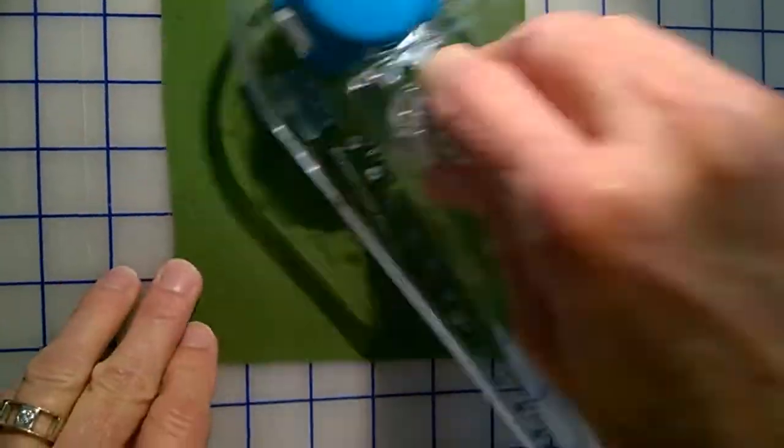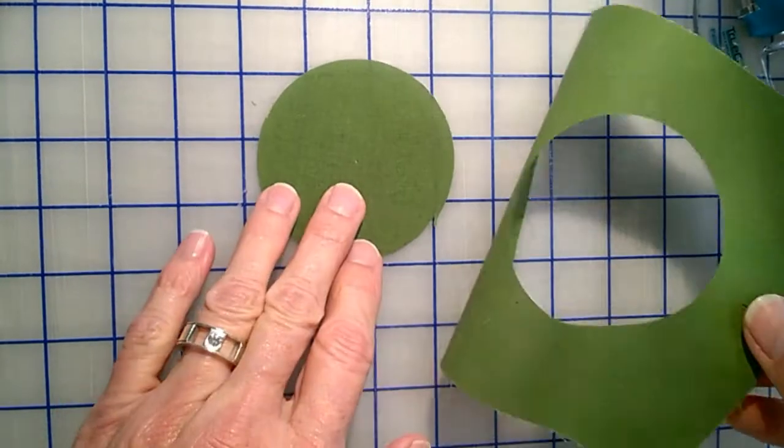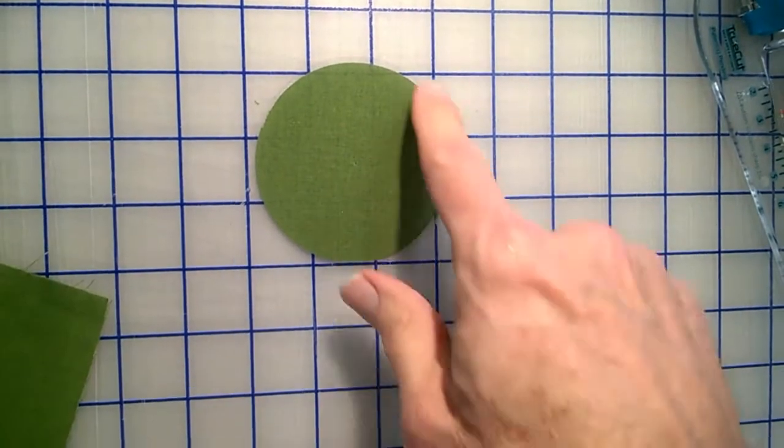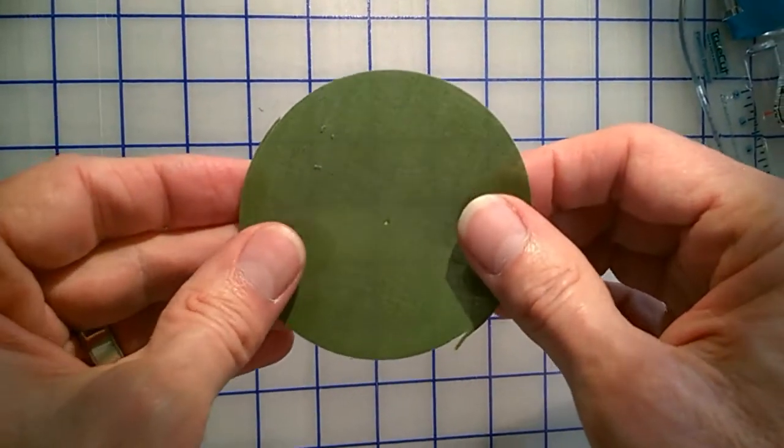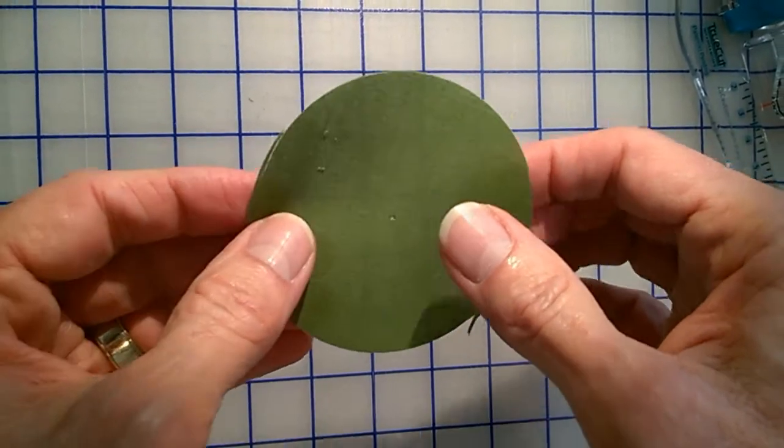Now I can lift out, take my circle out, and you see I have a nice clean circle. And this one's actually still stiff from the Terial Magic. However, if I want it to be soft again, I simply need to rinse the Terial Magic out of it.